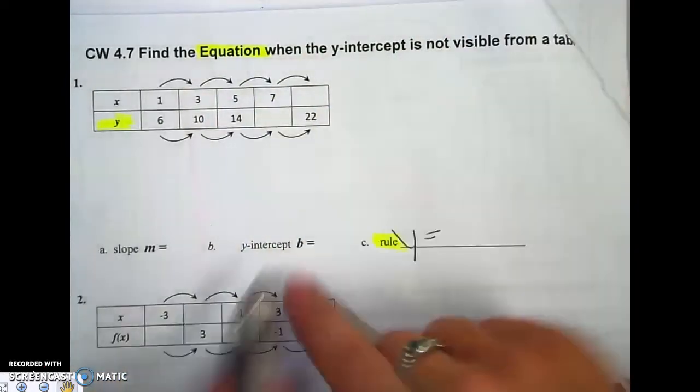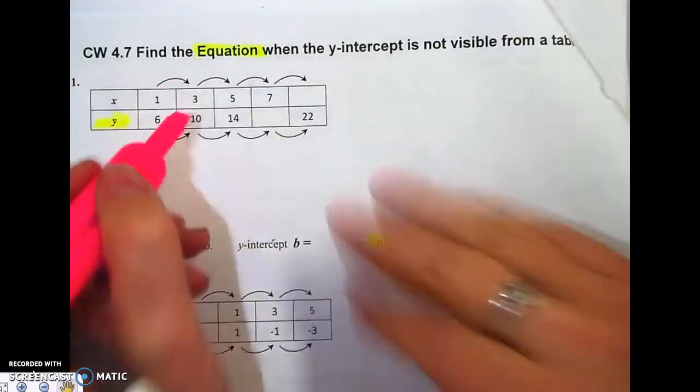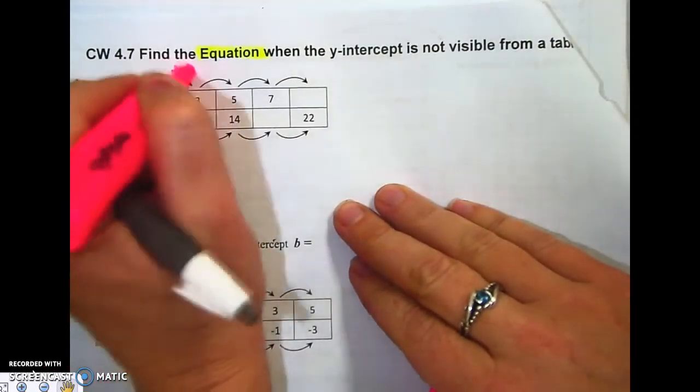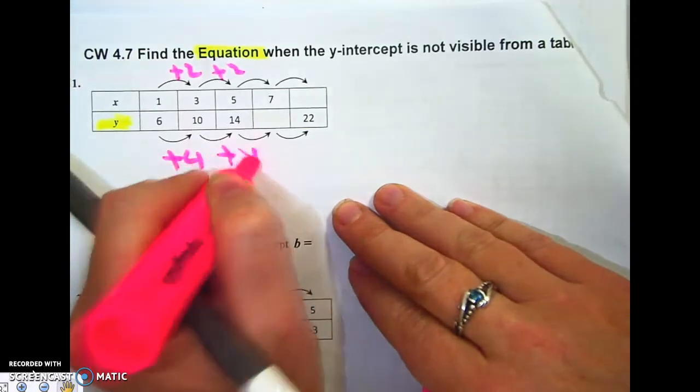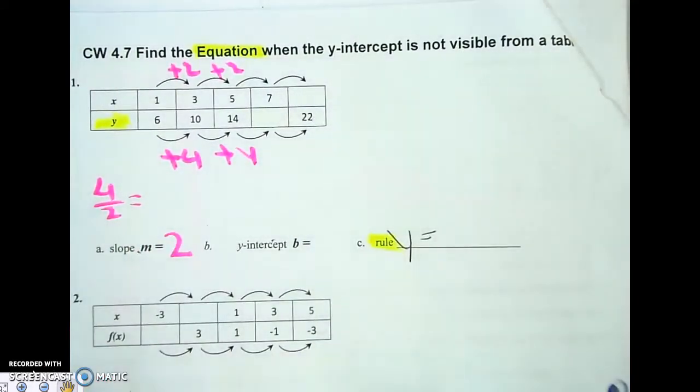Well, I don't see my y-intercept right now, so let's do the slope. Plus 4 plus 4, plus 2 plus 2. 4 over 2 is 2. Okay, I got my slope.